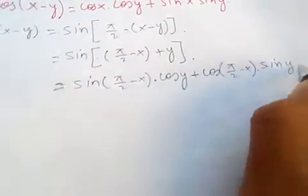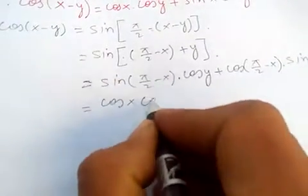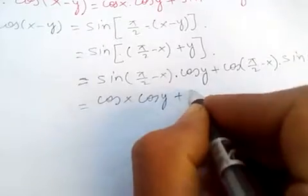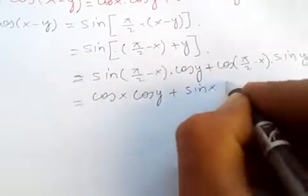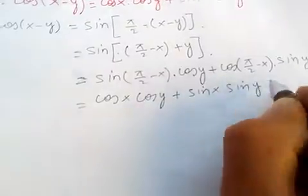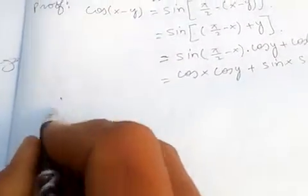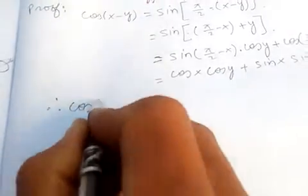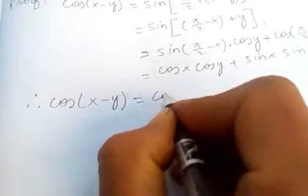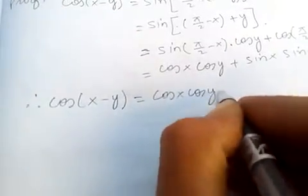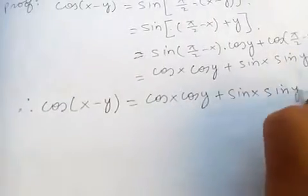So we get: sin(π/2 - x) is just cos(x), multiplied by cos(y), plus cos(π/2 - x) is just sin(x), multiplied by sin(y). Therefore, cos(x - y) = cos(x)cos(y) + sin(x)sin(y).